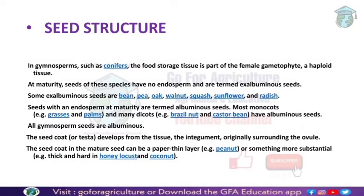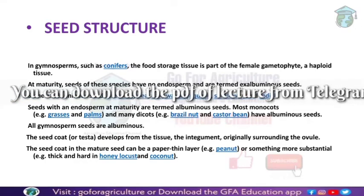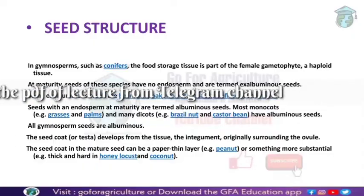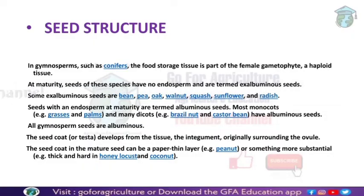In gymnosperms, the storage tissue is called the female gametophyte, which is haploid in nature — unlike the triploid endosperm of angiosperms. At maturity, some seeds have no endosperm and are termed ex-albuminous seeds, meaning the endosperm is absorbed very early during development.